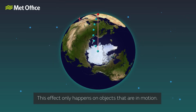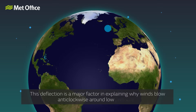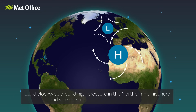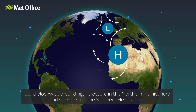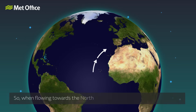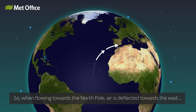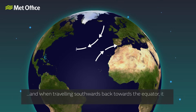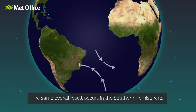This effect only happens on objects that are in motion. This deflection is a major factor in explaining why winds blow anti-clockwise around low pressure and clockwise around high pressure in the northern hemisphere. So when flowing towards the north pole, air is deflected towards the east, and when travelling southwards back towards the equator, it is deflected westwards. The same overall result occurs in the southern hemisphere.